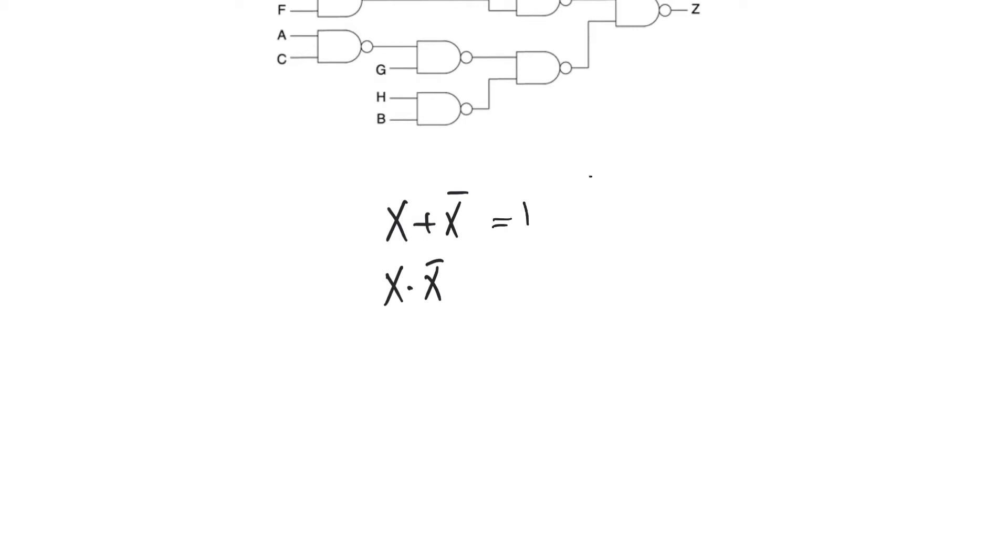However, because there can be a differential delay between the x and the x bar, because we have a true and a complement form of a variable making an appearance, there is a possibility that there will be a glitch. Now, because the output here is supposed to be one all the time, the kind of glitch we can see will be a static one hazard. So, this is specifically the kind of hazard we can observe with the structure x plus x bar.